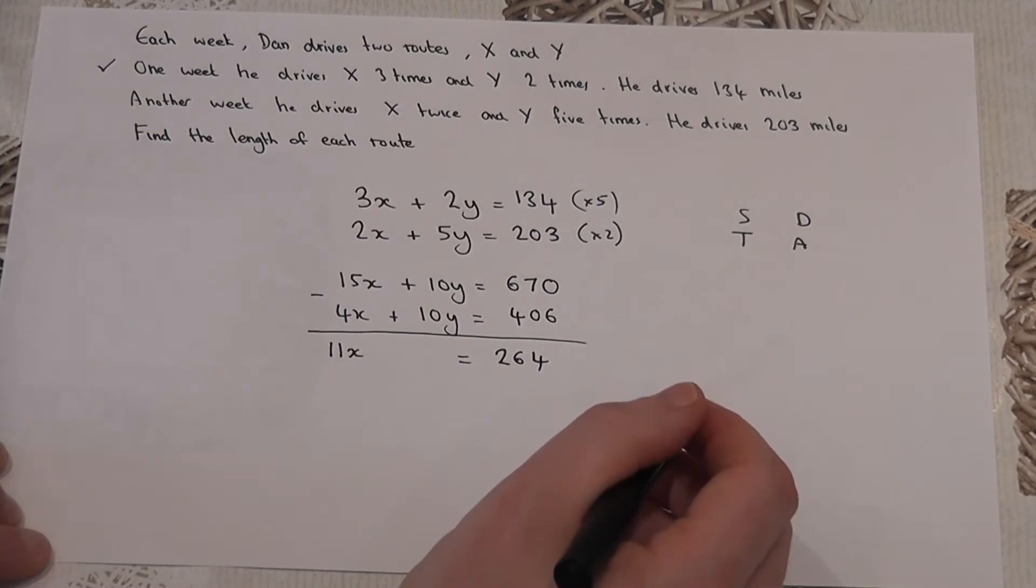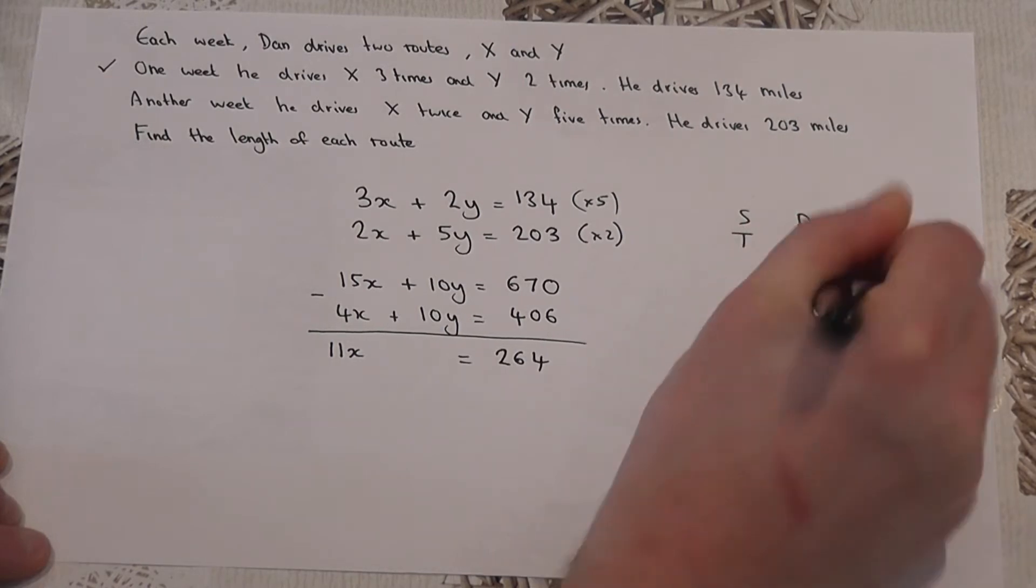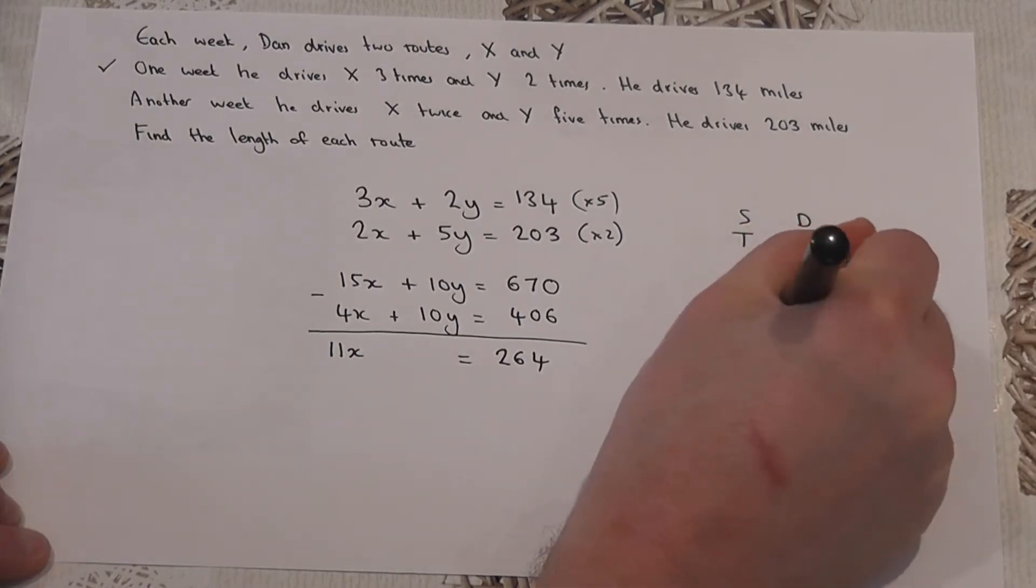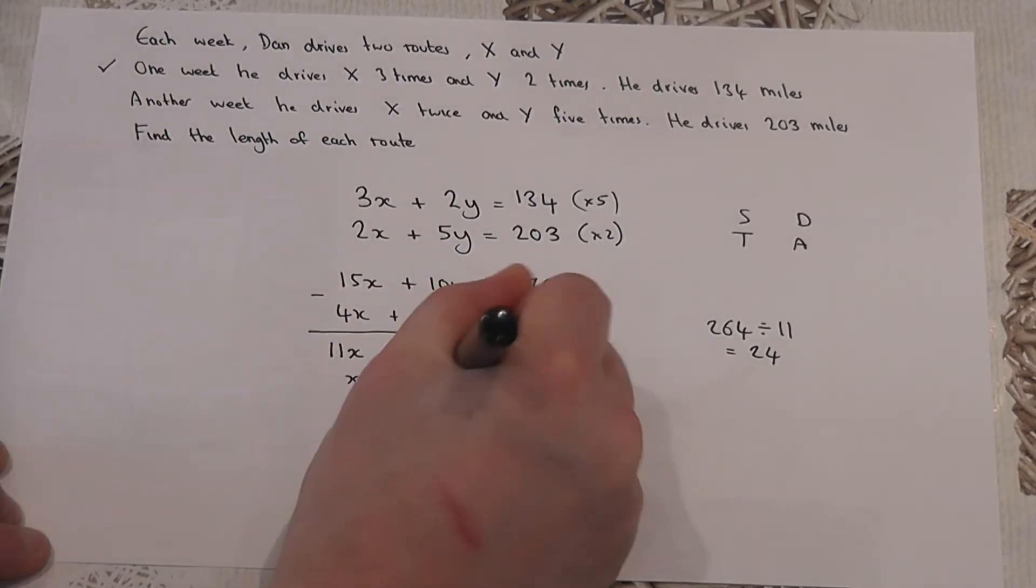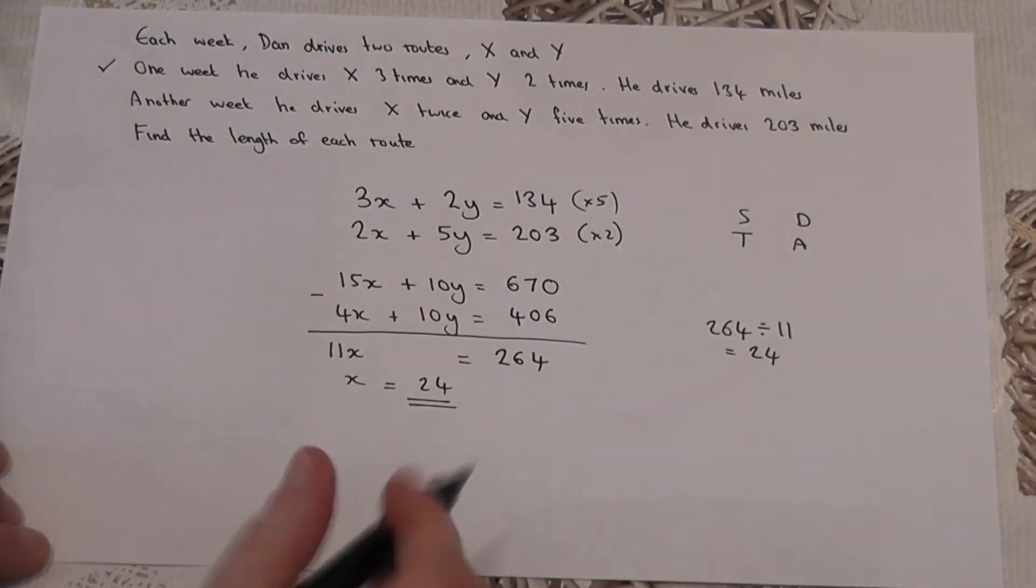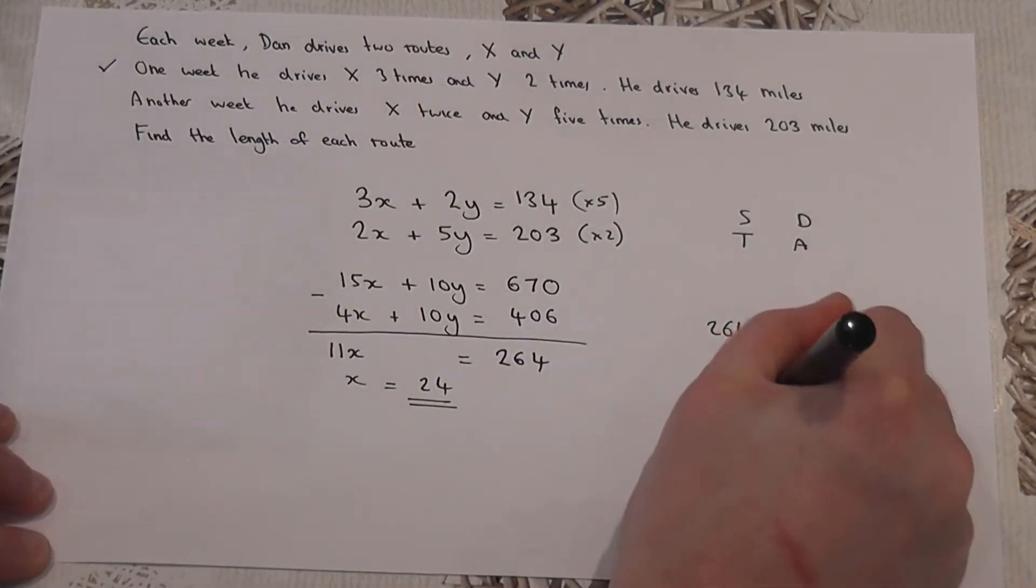Now, 11 times x is 264. So, to find x, we do 264 divided by 11, which is 24. So, x equals 24. I therefore know that the length of route x is 24 miles.